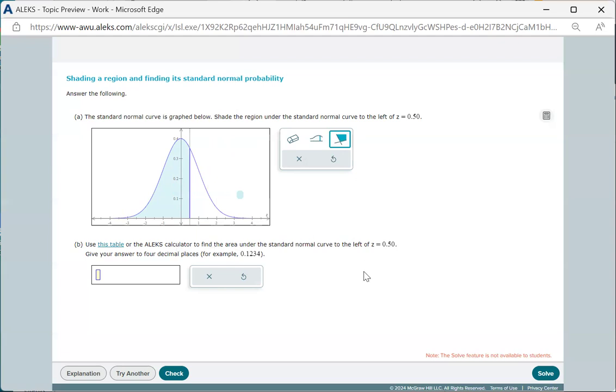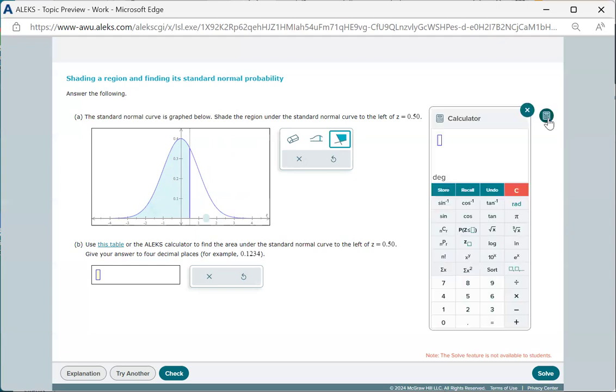For part B, to find the area of the region that we've just shaded, we can use the calculator, which has a function that calculates the probability that the standard normal is less than or equal to a particular value. It's this P of z less than or equal to something.